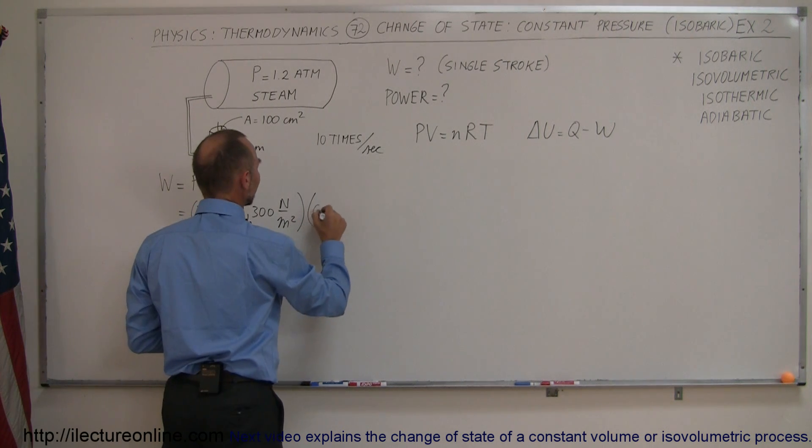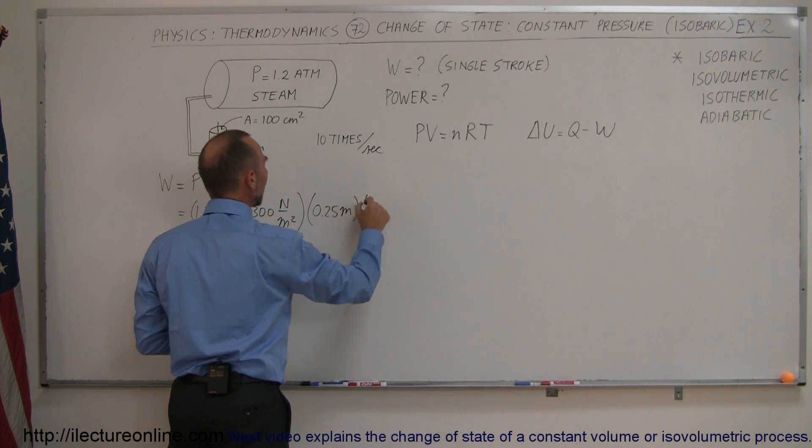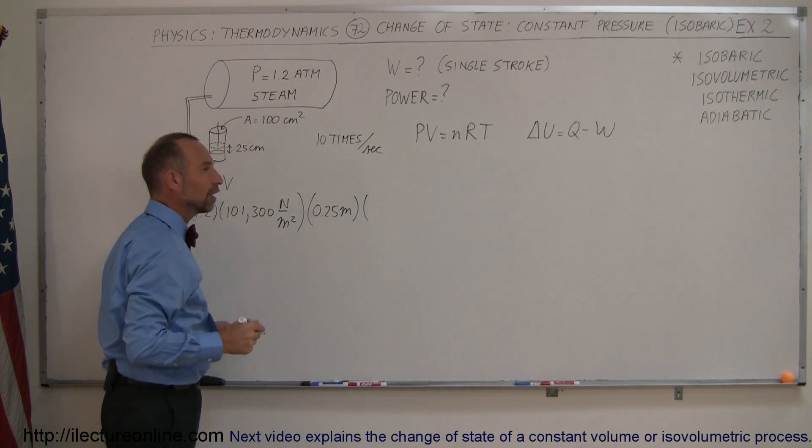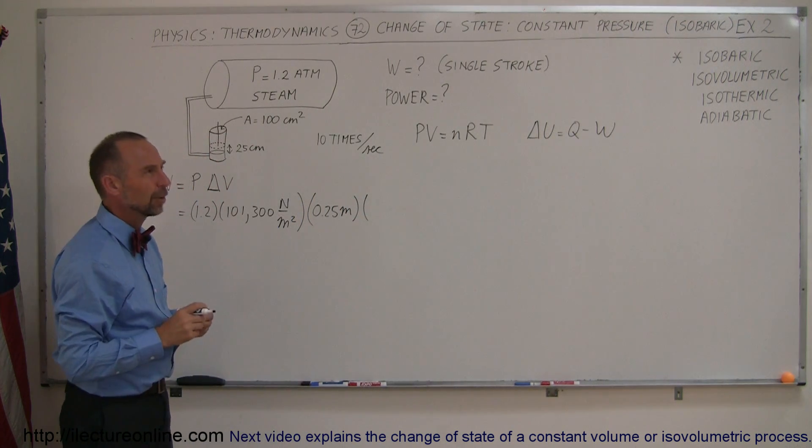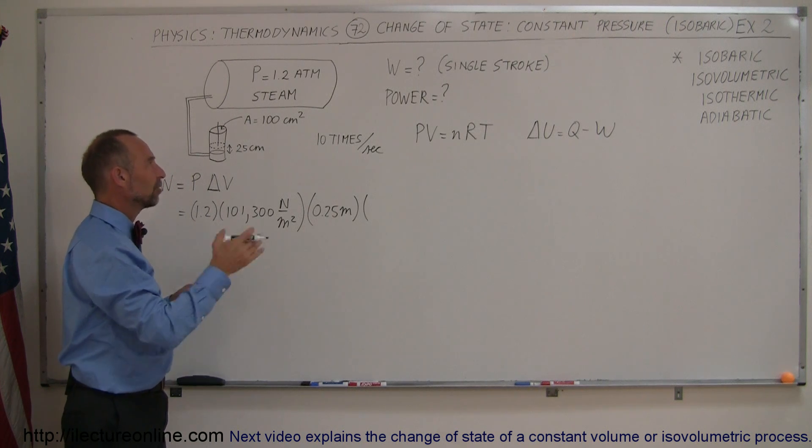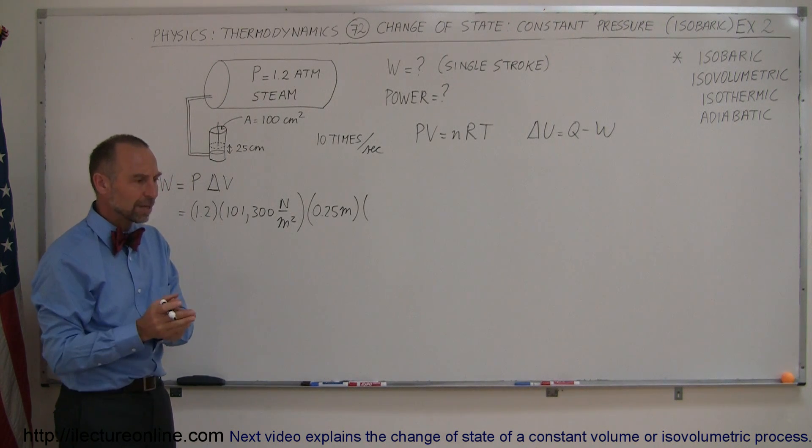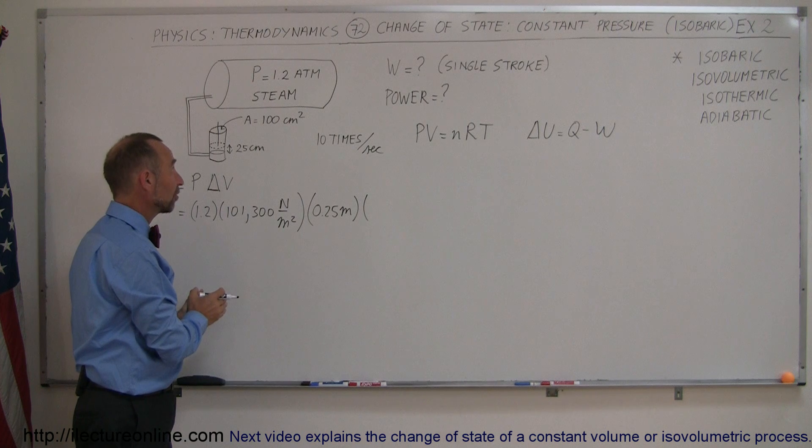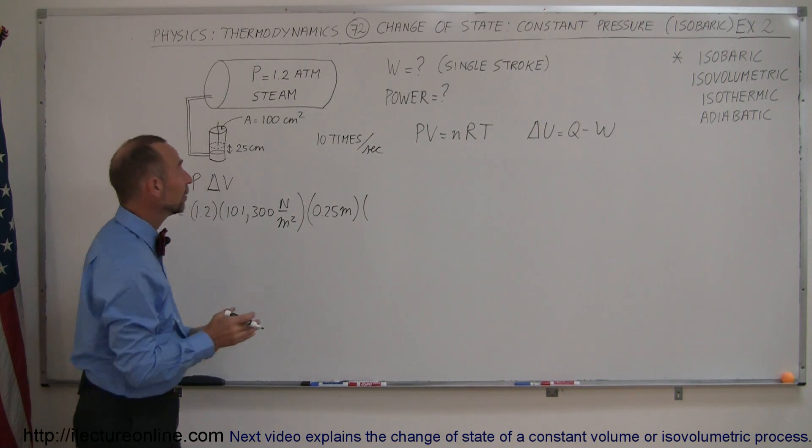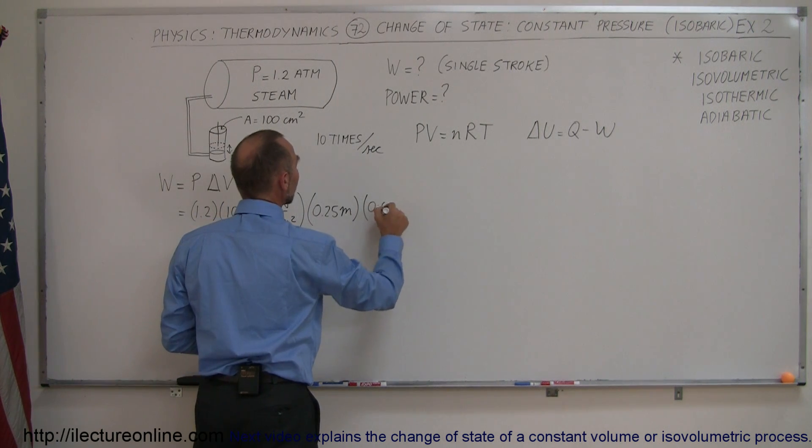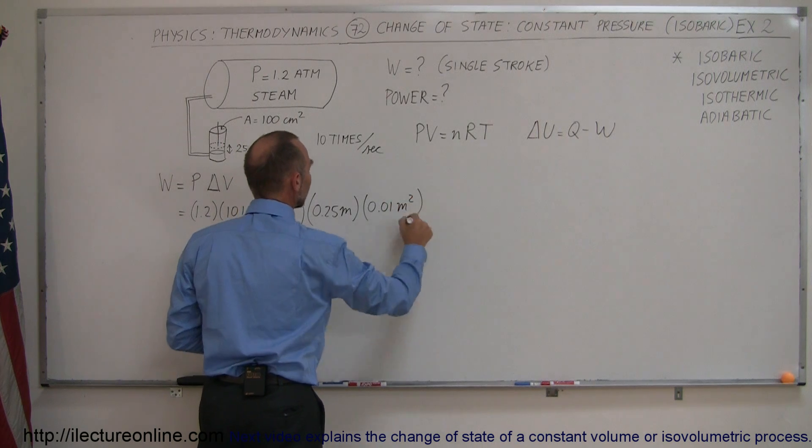So, 25 centimeters is 0.25 meters. And 100 square centimeters converted to square meters. Well, since we go from centimeters to meters, it's 100 centimeters to a meter, or 10,000 square centimeters to 1 square meter. So, this is equal to 0.01 meters squared.